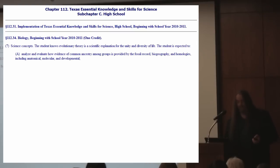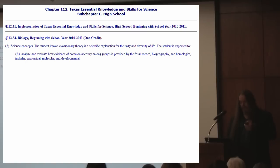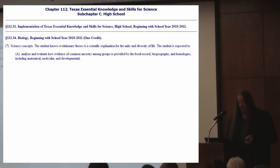The student is expected to analyze and evaluate how evidence of common ancestry among groups is provided by the fossil record, biogeography, and homologies, including anatomical, molecular, and developmental. It is important not only to know what evolution is and how it works, but also what sort of patterns it follows. There are a number of natural laws that work within evolution, just as there are in any scientific theory.